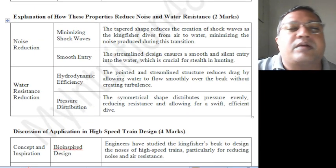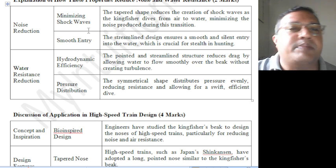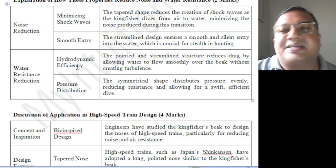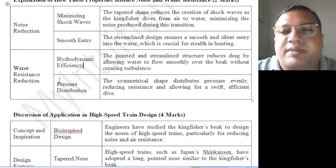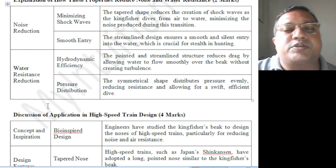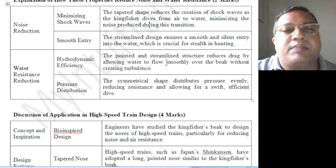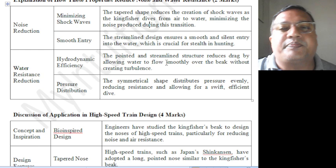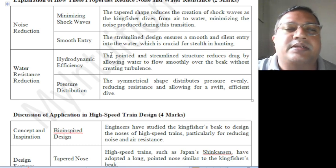Based on those observations, how these shapes reduce noise and water resistance was analyzed. Noise reduction happens and water resistance reduction happens — meaning minimum shock waves and smooth energy transfer to the water. Water resistance reduction is due to hydrodynamic efficiency and even pressure distribution. The tapered shape reduces the creation of shock waves as the kingfisher dives from air to water, minimizing the noise produced during this transition.